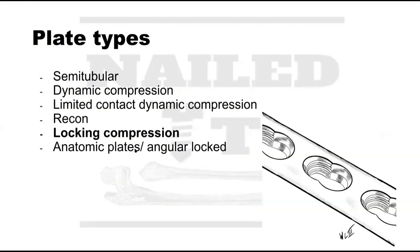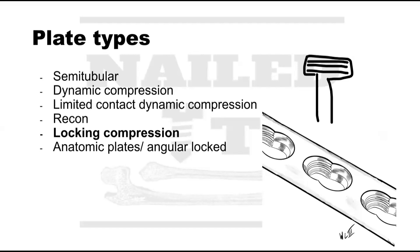A locking compression plate has holes where one side has threads and the other side is smooth. On the threaded side you can place a locking screw — a screw with threads on the head that lock and engage into the plate itself. On the smooth side you place a cortical screw, where there are no threads in the head and you get compression from the screw against the plate. So a locking compression plate accommodates both locking and cortical screws.